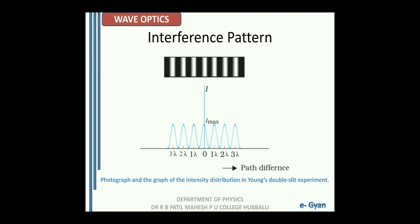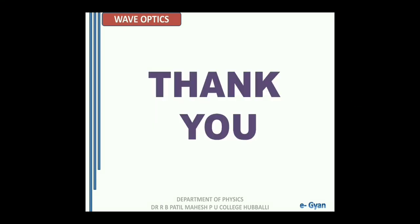The significance of all bright fringes being equally bright and all dark fringes being equally dark will be understood when we discuss the diffraction phenomenon — mark this statement for now. In today's lecture we derived the expression for fringe width, understood how fringe width changes due to changes in wavelength, slit-to-screen distance, and slit separation, and finally examined the intensity variation at various positions on the screen of the interference pattern. Thank you.